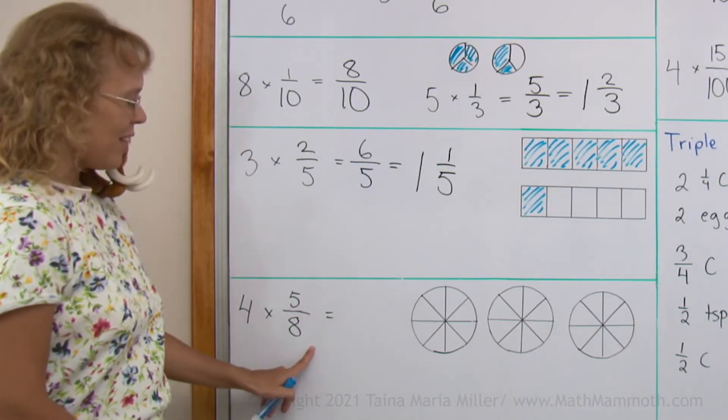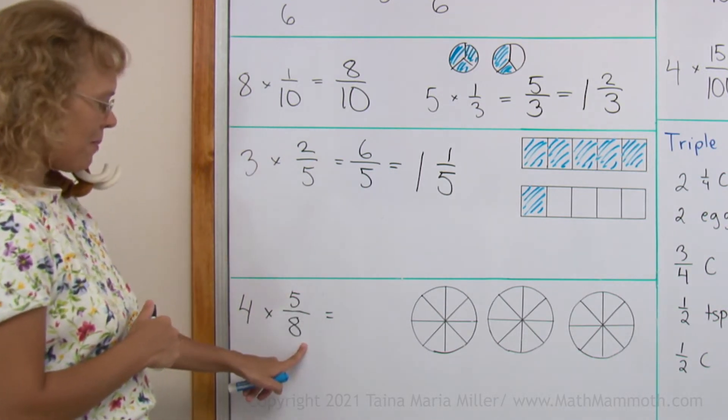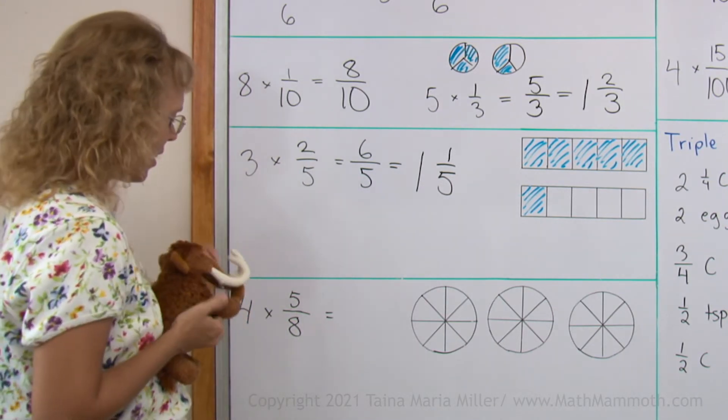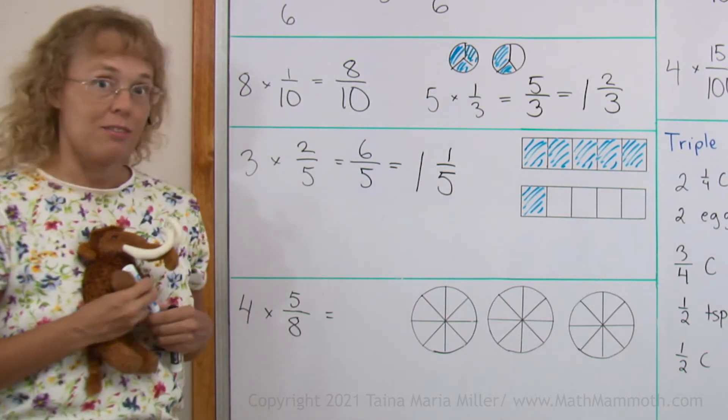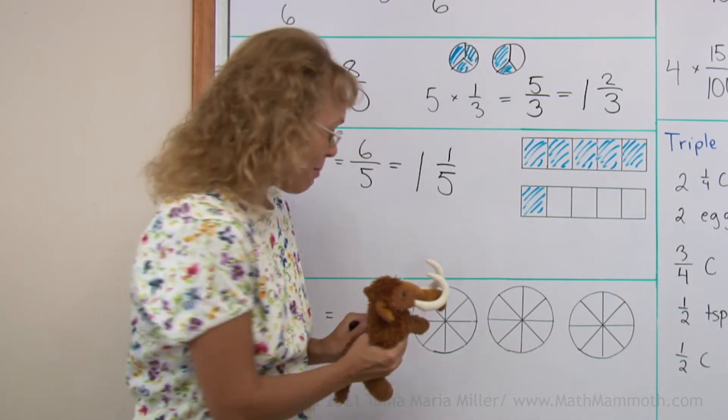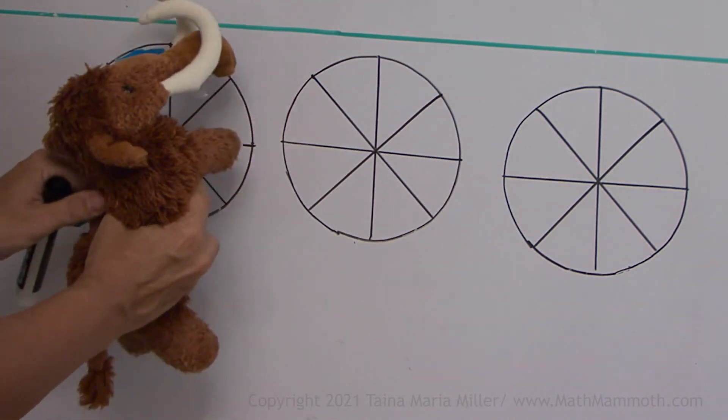4 times 5 eighths. 4 copies of 5 eighths. And this time I'm going to let Mathie color some. Come on, Mathie. Can you color me 5 eighths 4 times? And let's see what we get. Maybe you can figure it out while Mathie's coloring. I think he's going to take some time. Figure out the final answer if you can.